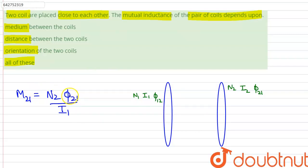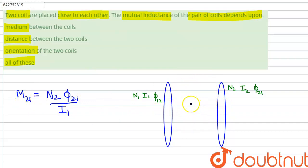Mutual inductance is also dependent on magnetic flux, and magnetic flux in turn is dependent on magnetic field. Since the magnetic field is dependent on the relative permeability of the medium, the mutual inductance is also dependent on the permeability of the medium.